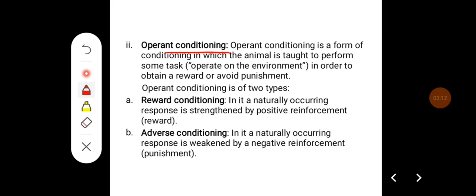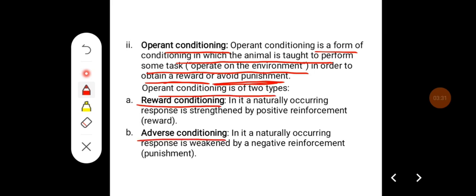Operant conditioning is a form of conditioning in which an animal is taught to perform some task or operate on the environment in order to obtain a reward or avoid punishment. Operant conditioning is of two types: reward conditioning and aversive conditioning. In reward conditioning, a naturally occurring response is strengthened by positive reinforcement (reward). In aversive conditioning, the naturally occurring response is weakened by negative reinforcement (punishment).